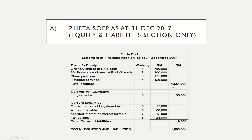The total equity is equal to RM1,551,000. Non-current liability is from a long-term loan at RM135,000. Current liability consists of current portion of long-term loan RM15,000, accounts payable RM68,000, accrued interest or interest payable RM12,000, and tax payable RM24,000 — giving total current liability of RM119,000.